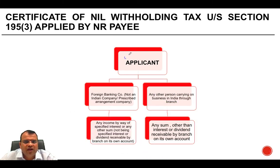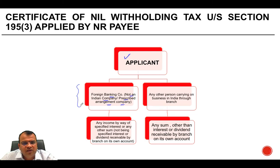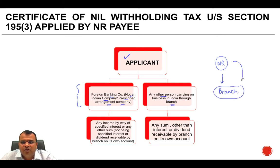The applicant can be a foreign banking company — it should not be an Indian company or a foreign company which has made prescribed arrangements for declaration of dividend in India. Alternatively, it can be any other person carrying on business in India through a branch. So if there is a non-resident who has a branch in India and is carrying on business through that branch, they can also approach for a nil withholding tax certificate under Section 195(3).